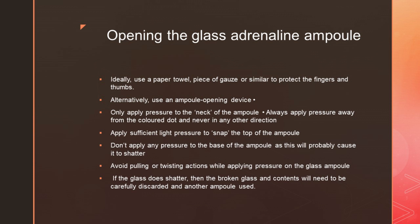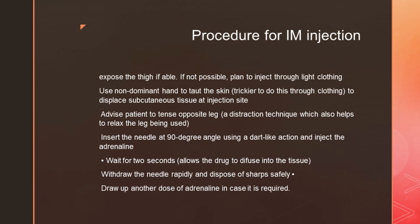When loading from a glass adrenaline ampoule, use a paper towel or gauze to protect fingers and thumbs from glass injury. Alternatively use an ampoule-opening device. Apply pressure at the neck of the ampoule away from the color dot. Apply sufficient light pressure to snap the top of the ampoule. Do not apply pressure to the base, which may cause shattering. Avoid pulling or twisting. If the glass shatters, carefully discard the broken glass and contents and use another ampoule.